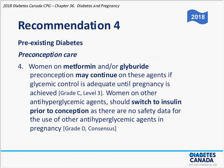Regarding preconception care: women on metformin and/or glyburide may continue on these agents if glycemic control is adequate until pregnancy is achieved. Women on other anti-hyperglycemic agents — DPP-4 inhibitors, SGLT-2 inhibitors, GLP-1 receptor agonists — need to switch to insulin prior to conception. For type 2 patients not meeting glycemic targets on metformin and/or glyburide, they should be switched to insulin preconception. The key point is that until they are switched to insulin, the metformin and glyburide can continue — patients should not have a gap without any medication.